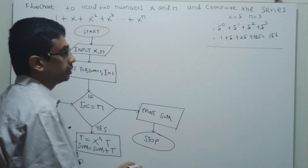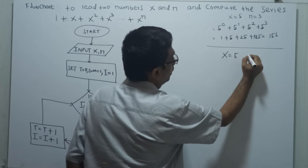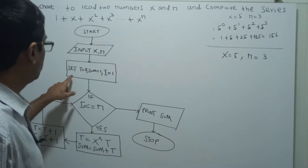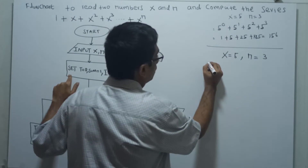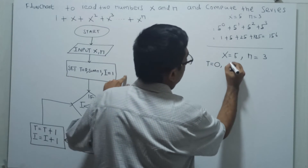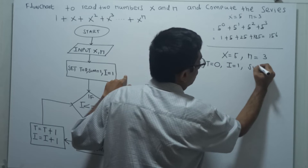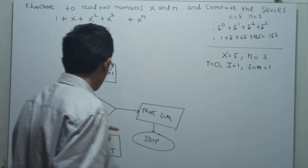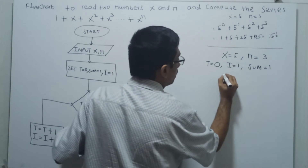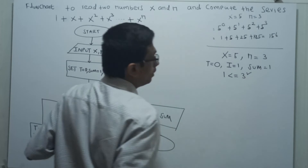Now I am checking how it works. The given value of x equal to 5 and n equal to 3. The initial values are: t equal to 0, i equal to 1, sum equal to 1. Now checking the condition: i less than or equal to n, that means 1 less than or equal to 3 — this is true.